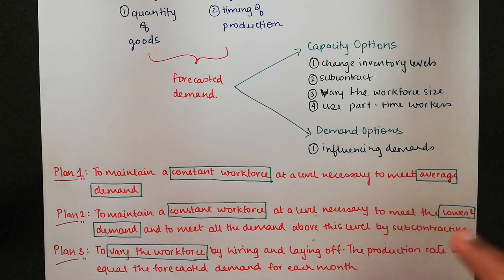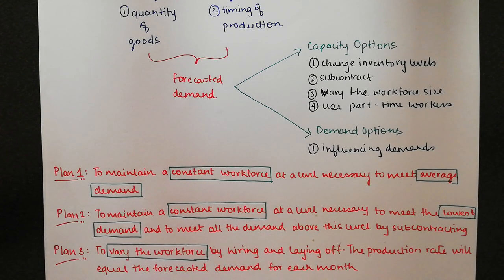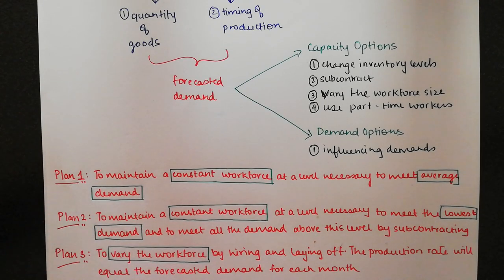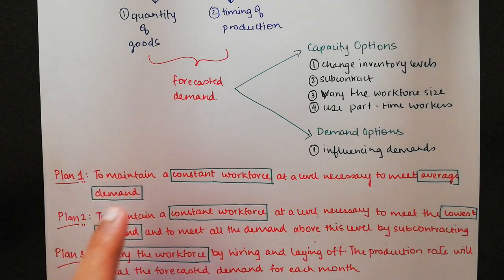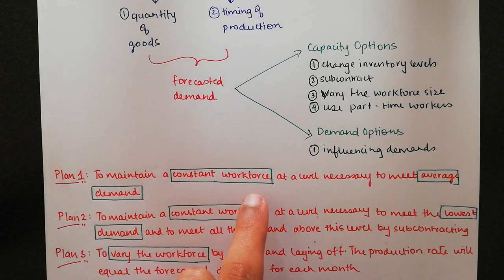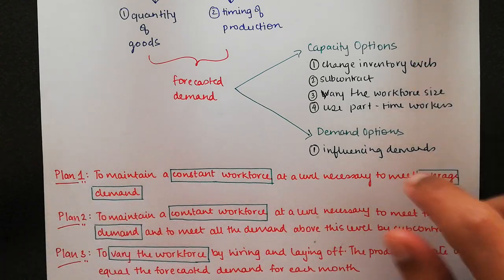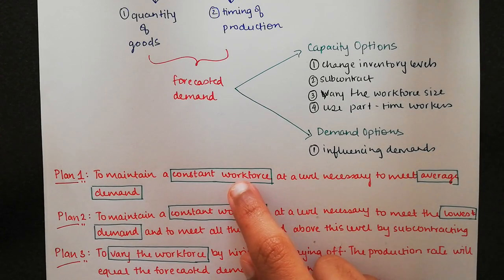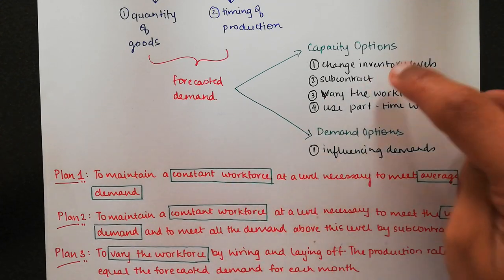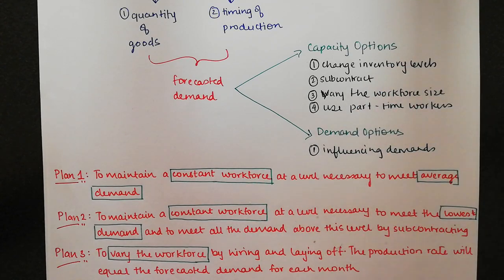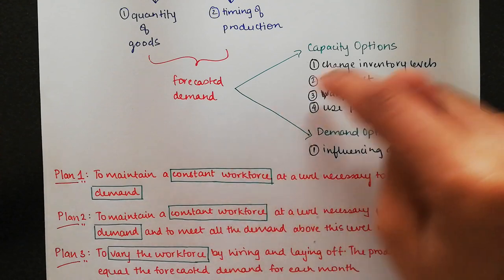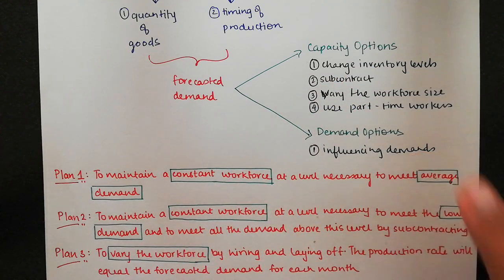To understand these three plans, we'll go through them now and introduce the idea. The first plan is to maintain a constant workforce at a level necessary to meet the average demand. The constant workforce is an element that comes under capacity options — you can use part-time workers, contracting, etc. — and the goal is to meet the average demand.